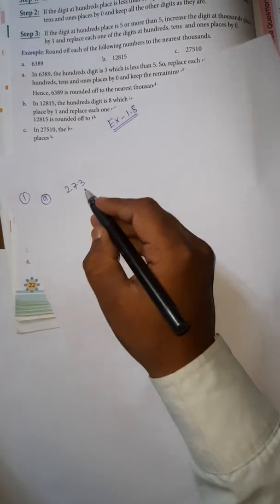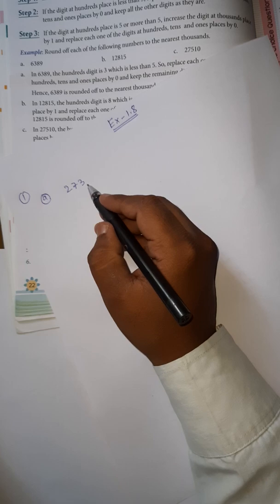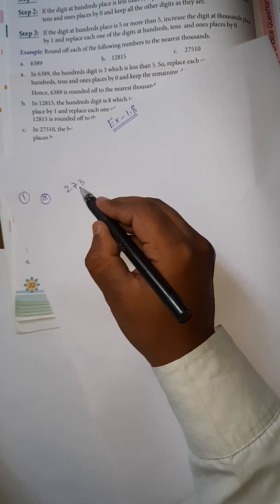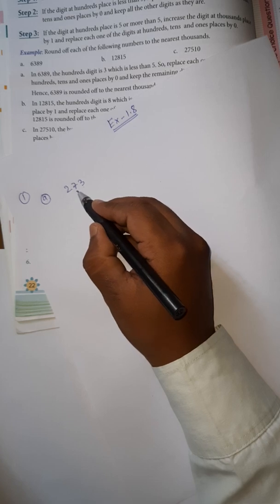First, count from the right side — that is ones, tens. This is your tens place. For rounding off, we need to look at the ones place digit.